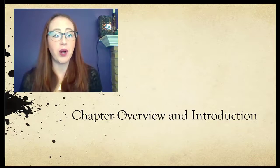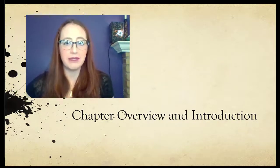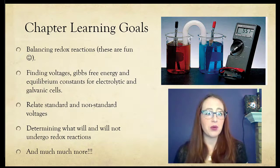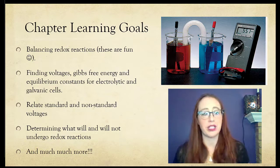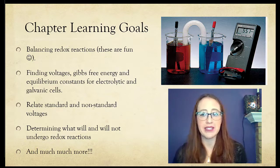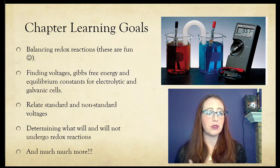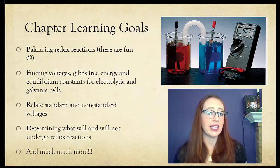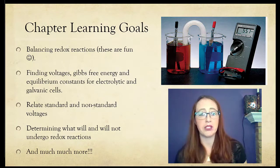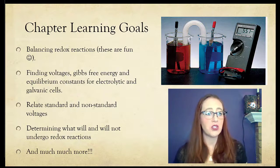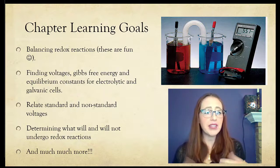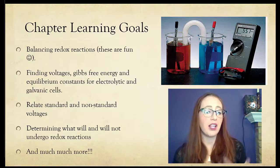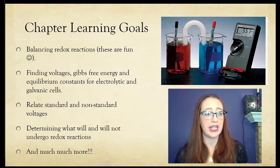Let's go over what we're going to learn in this chapter. Our learning goals include balancing redox reactions, with several parts to learning how to do this. Then we want to learn about finding voltages of chemical cells and relate that to all of the thermodynamic parameters we learned about in previous chapters — relating that to, for instance, Gibbs free energy — and also to equilibrium constants from earlier chapters. All of these things are related, so we're going to connect all of these concepts.